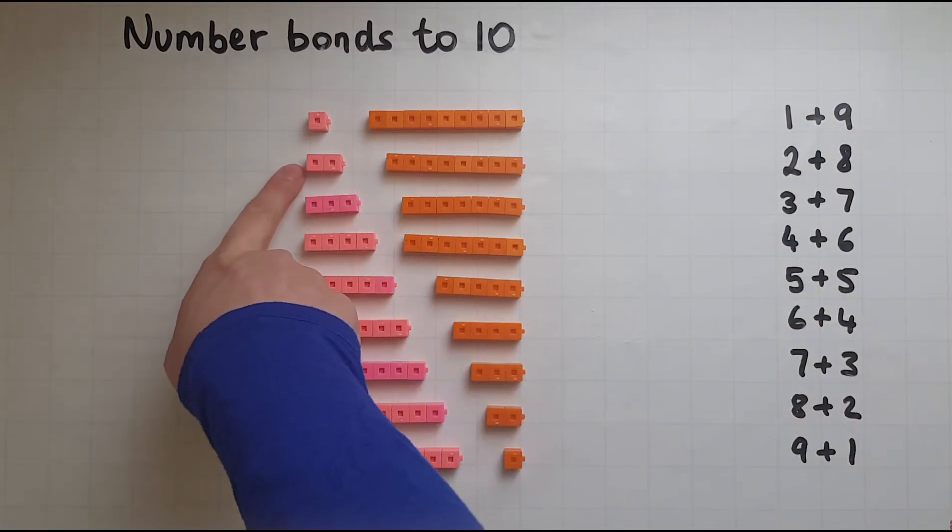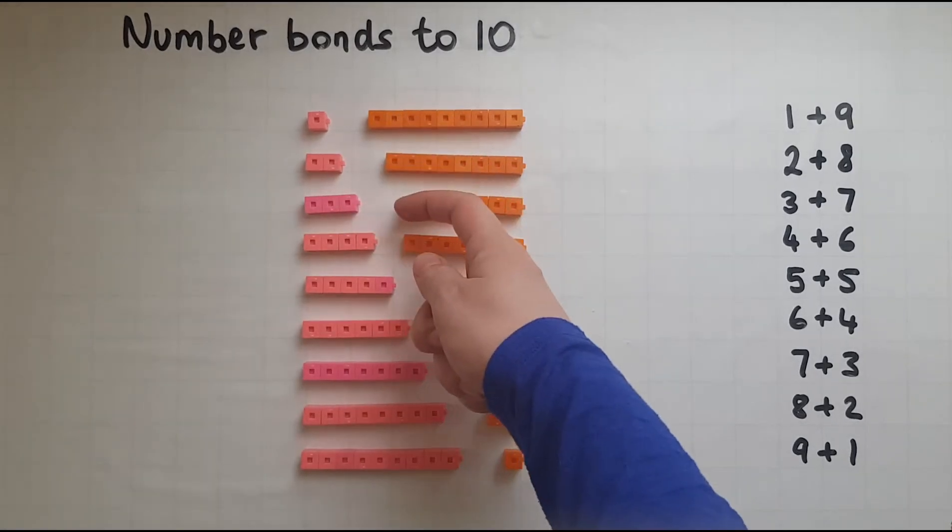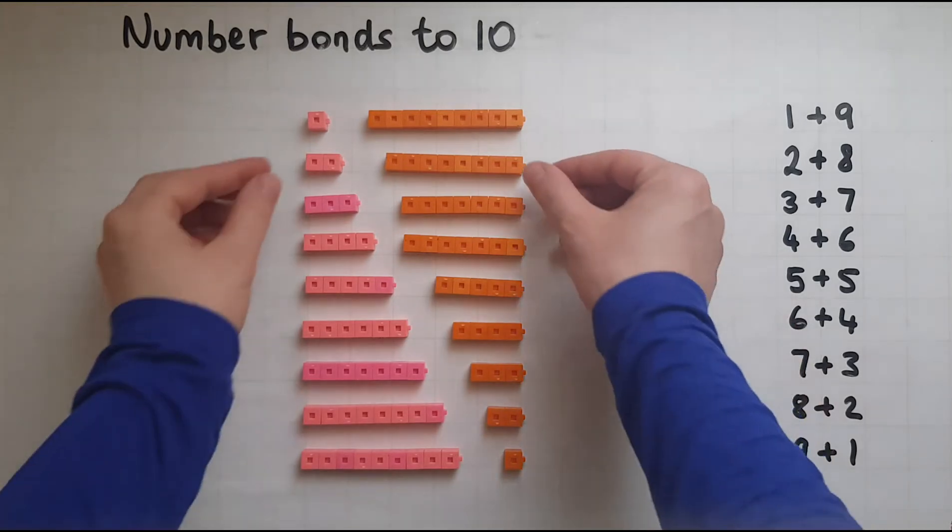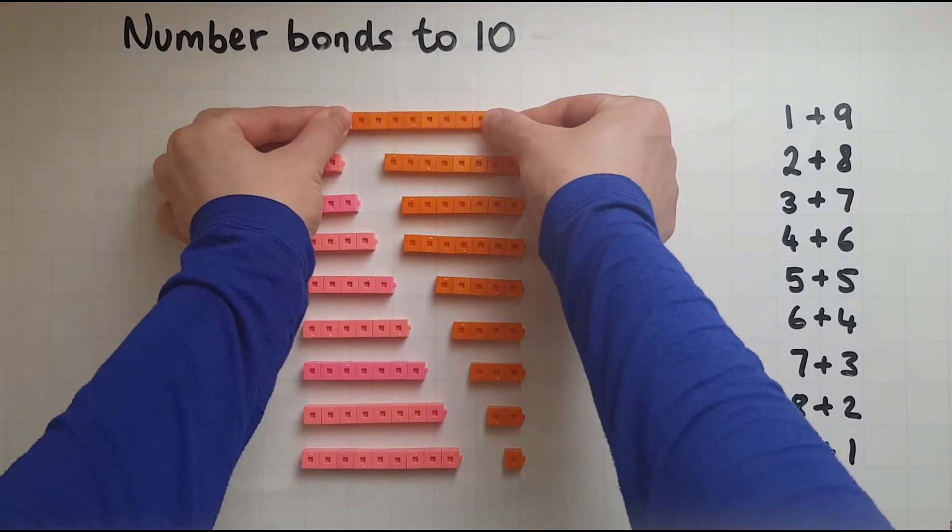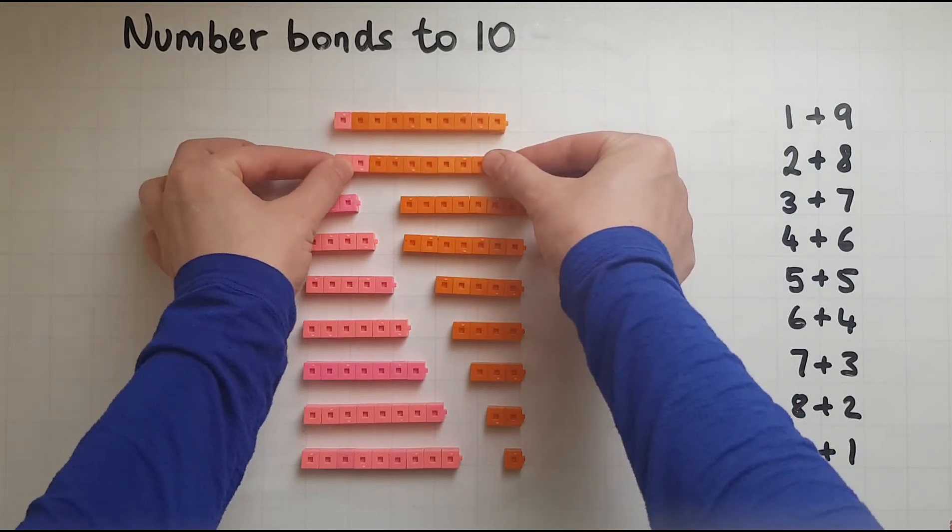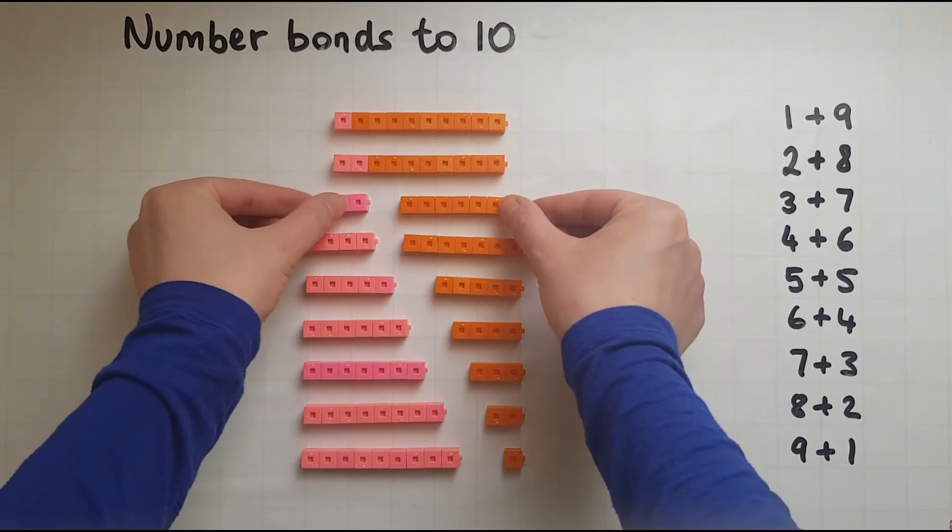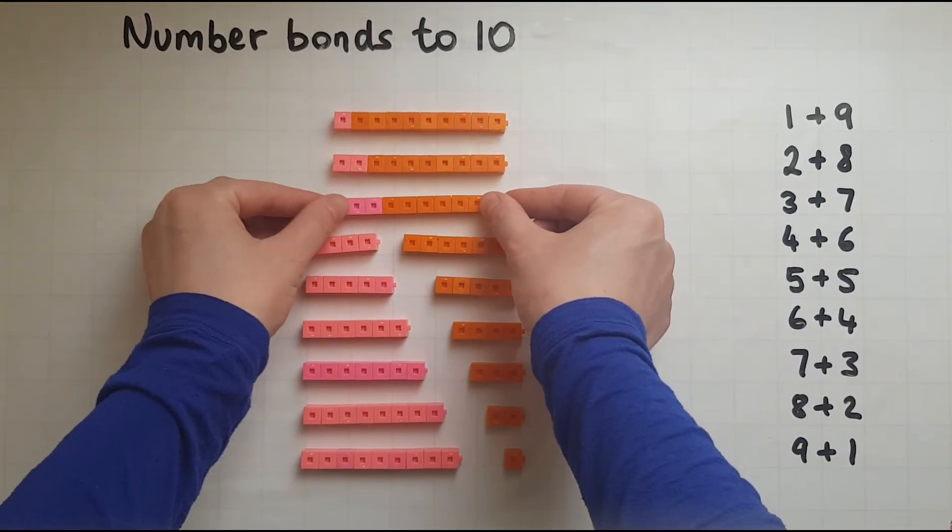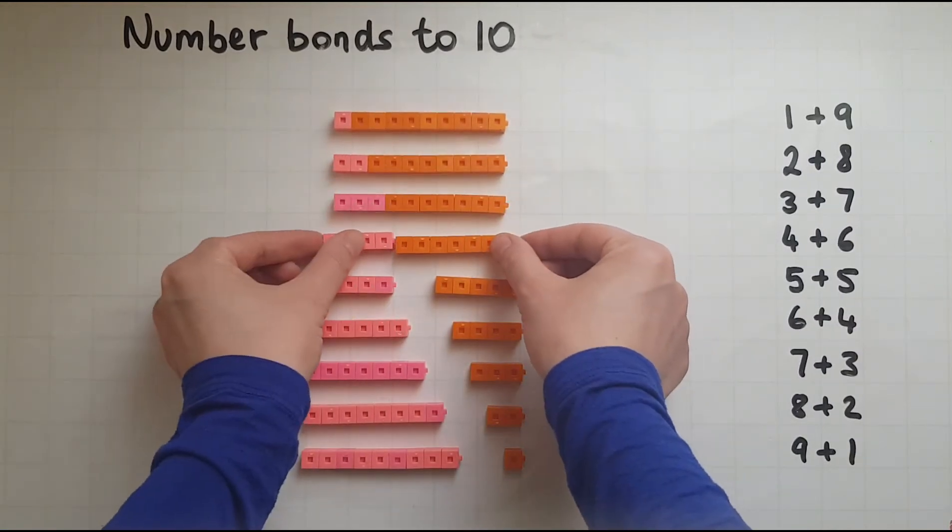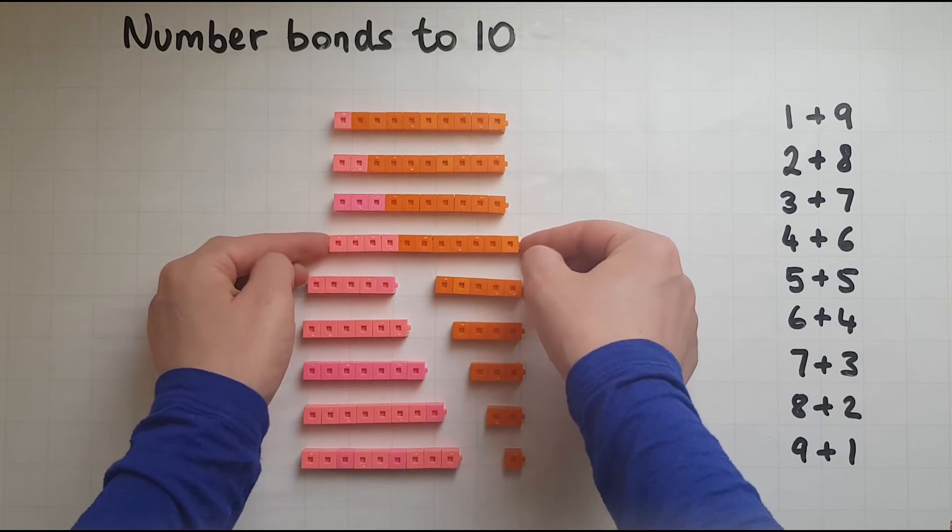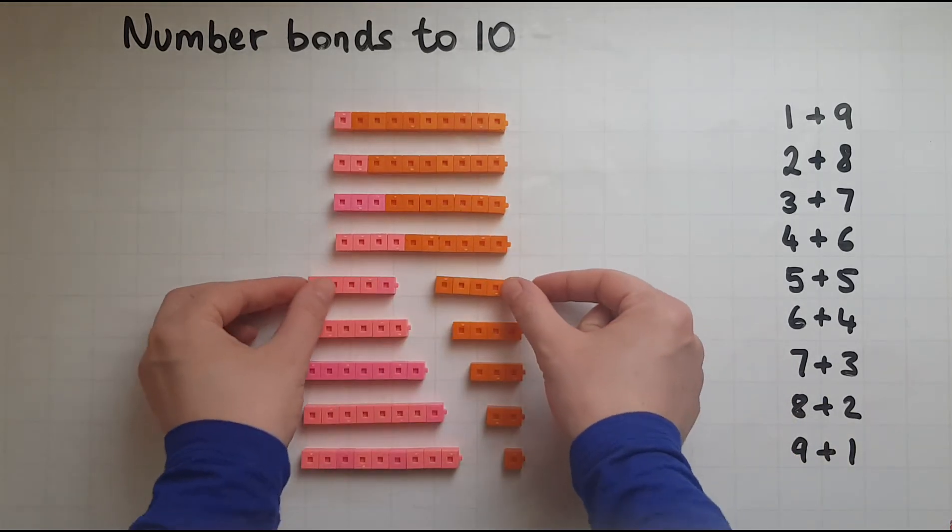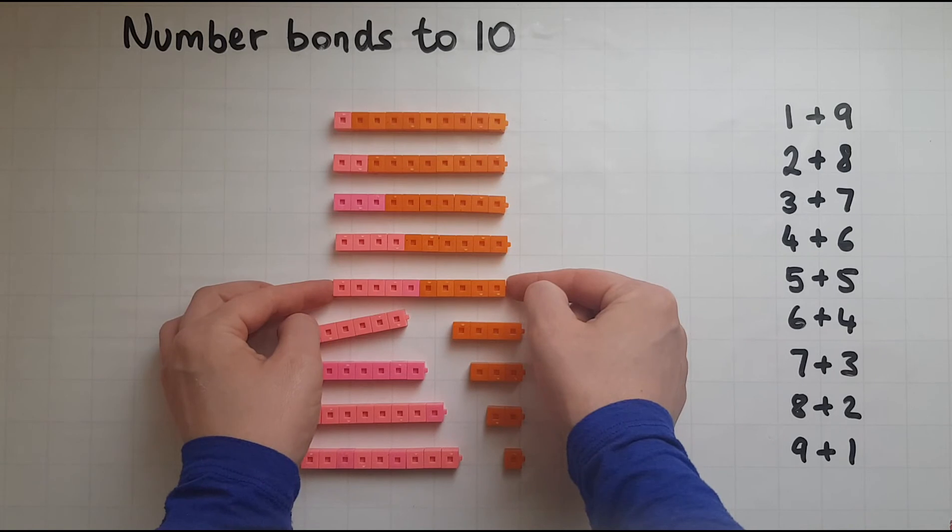If you add one more pink cube but you take away one orange cube that means that you will still have 10. Perhaps if I put them together it will be clearer. So the number of orange cubes is reduced and the number of pink cubes is increased.